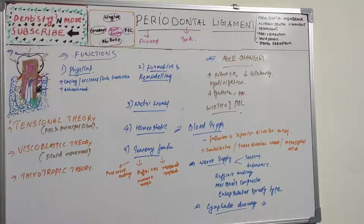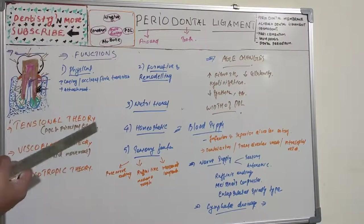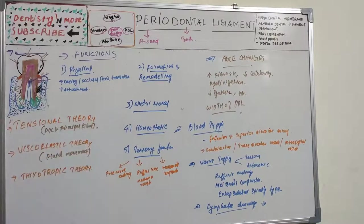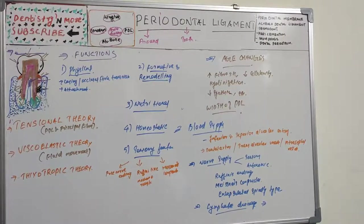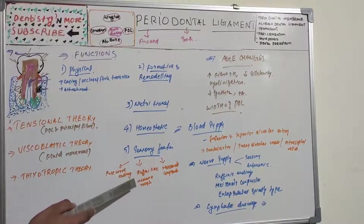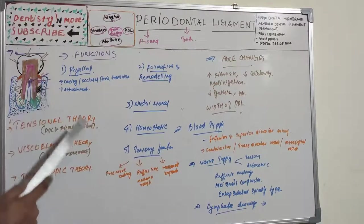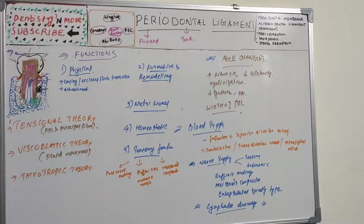The sensory function: the periodontal ligament is abundantly supplied with sensory nerve fibers capable of transmitting tactile, pressure, and pain sensations via the trigeminal pathway. Four types of neural terminations are seen: free nerve endings, Ruffini-like mechanoreceptors (found in the apical area), Meissner's corpuscles (seen at the middle third), and spindle-like pressure and vibration endings (also at the apex).